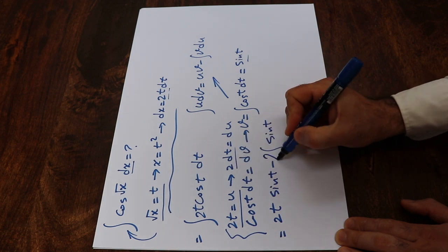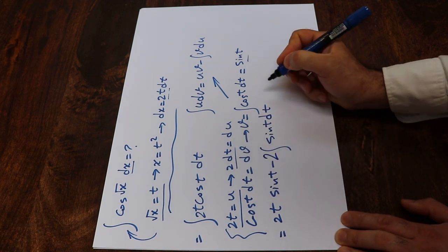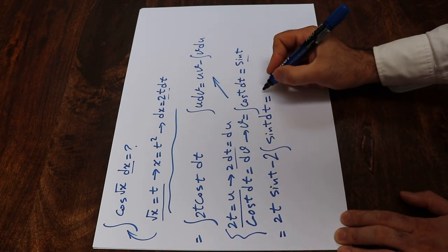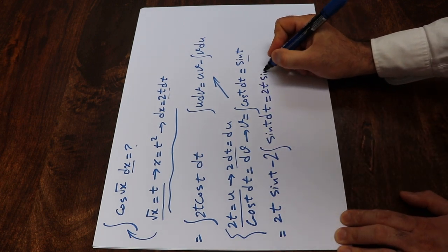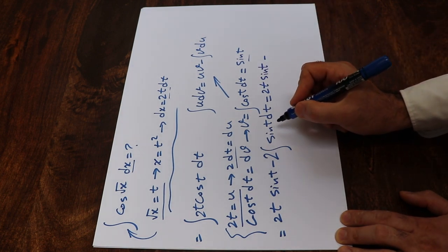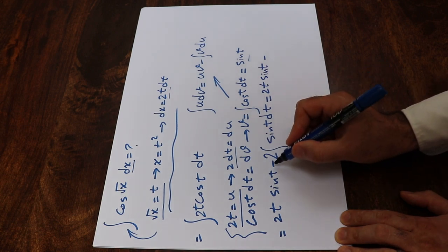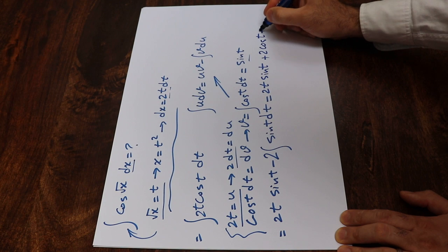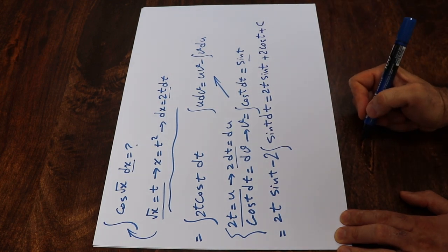And 2 is constant, so I take it out of the integral. And this integral will be equal to 2t sine t minus, we know that the integral of sine t is minus cosine t, so minus times this minus, that will be plus 2 cosine t plus c, which is the constant of the integral.